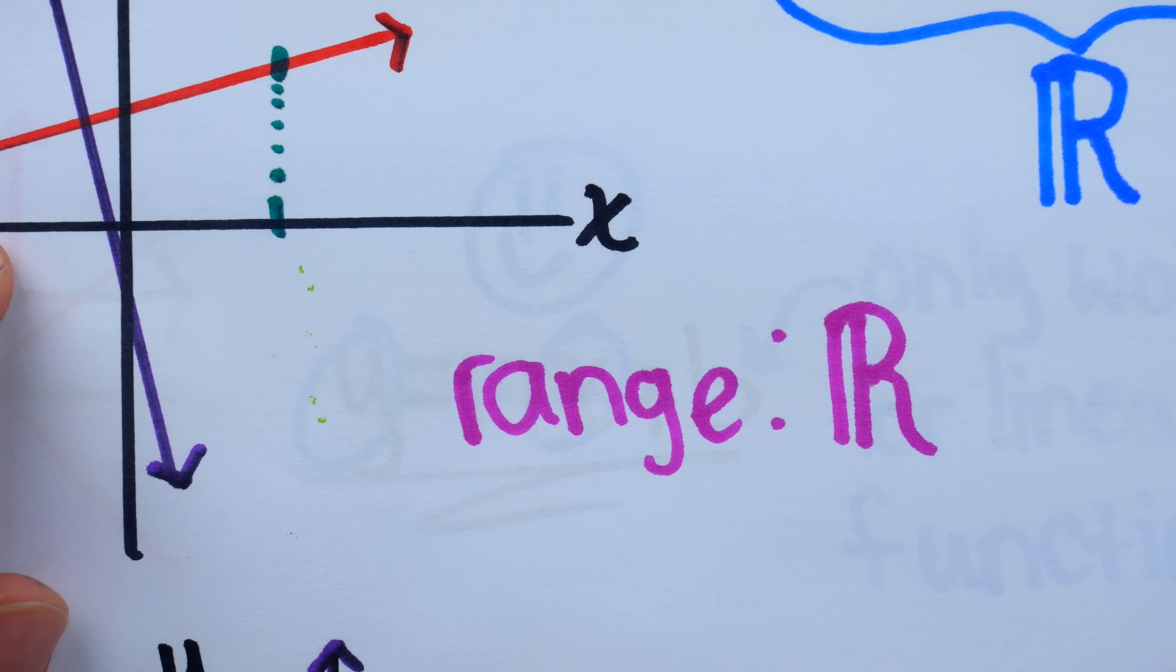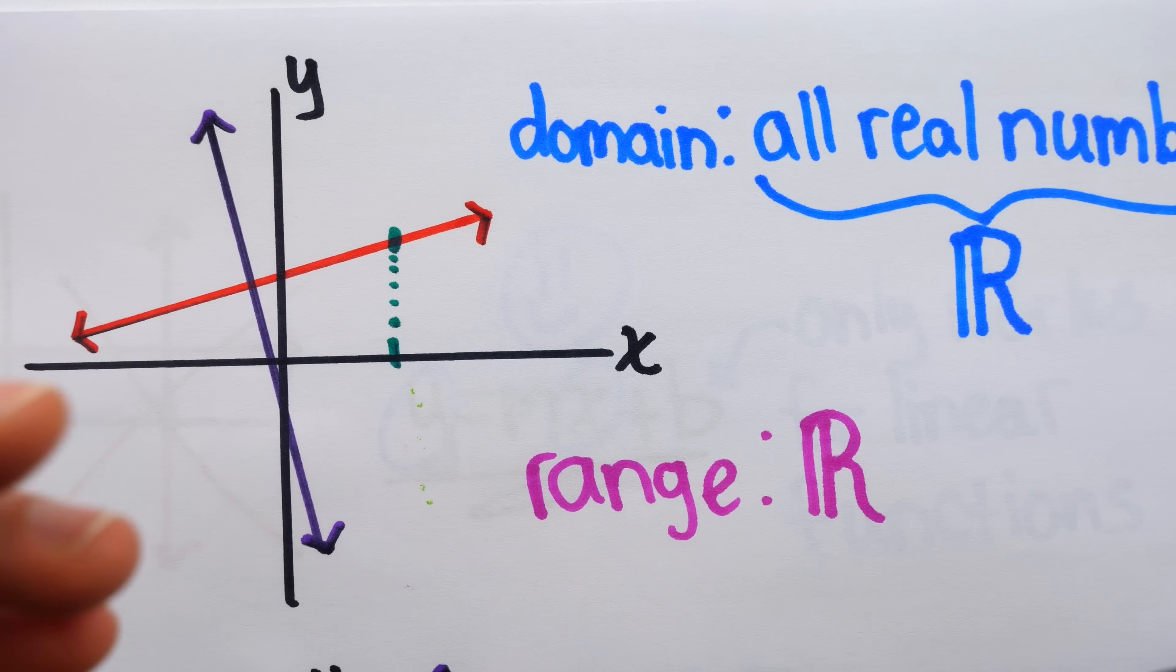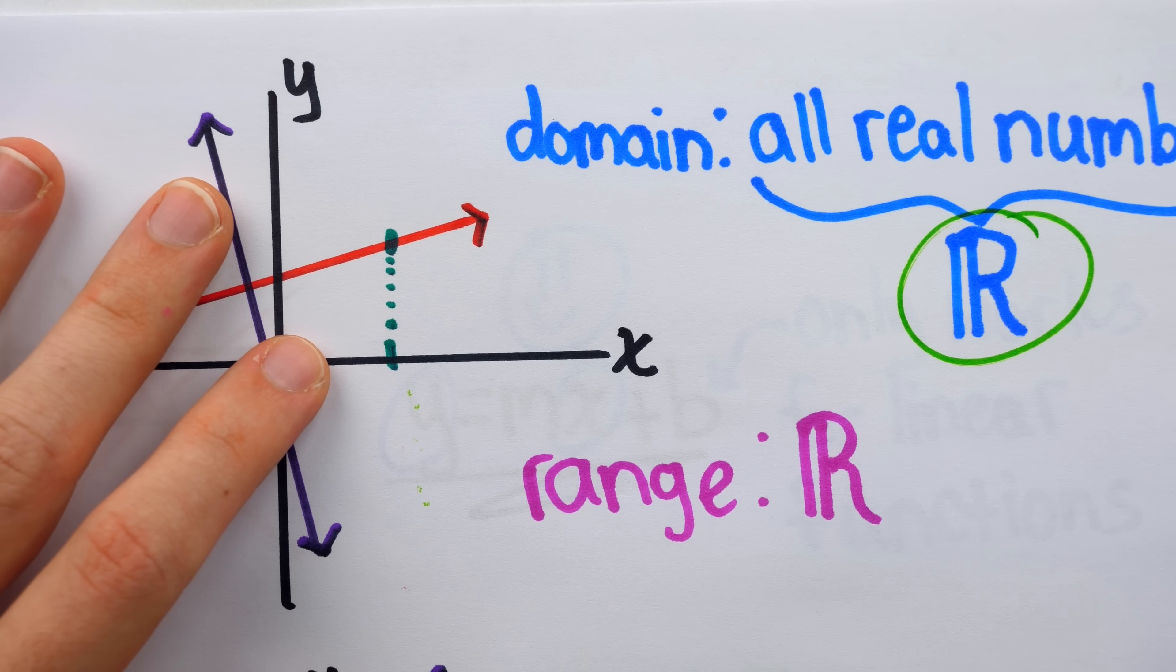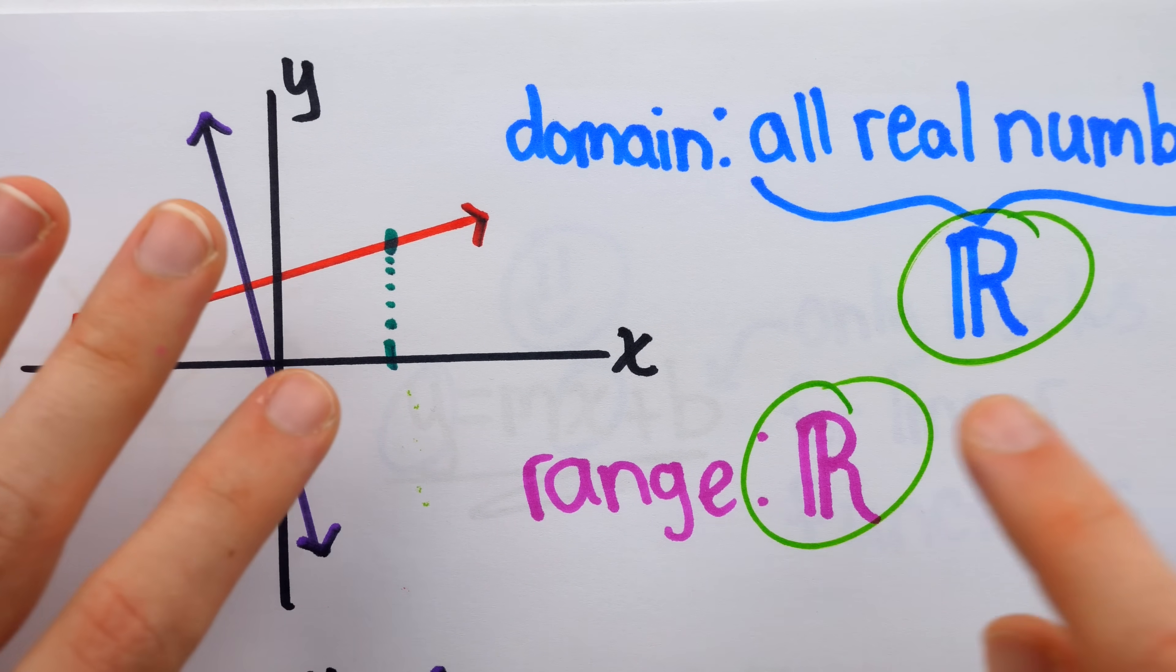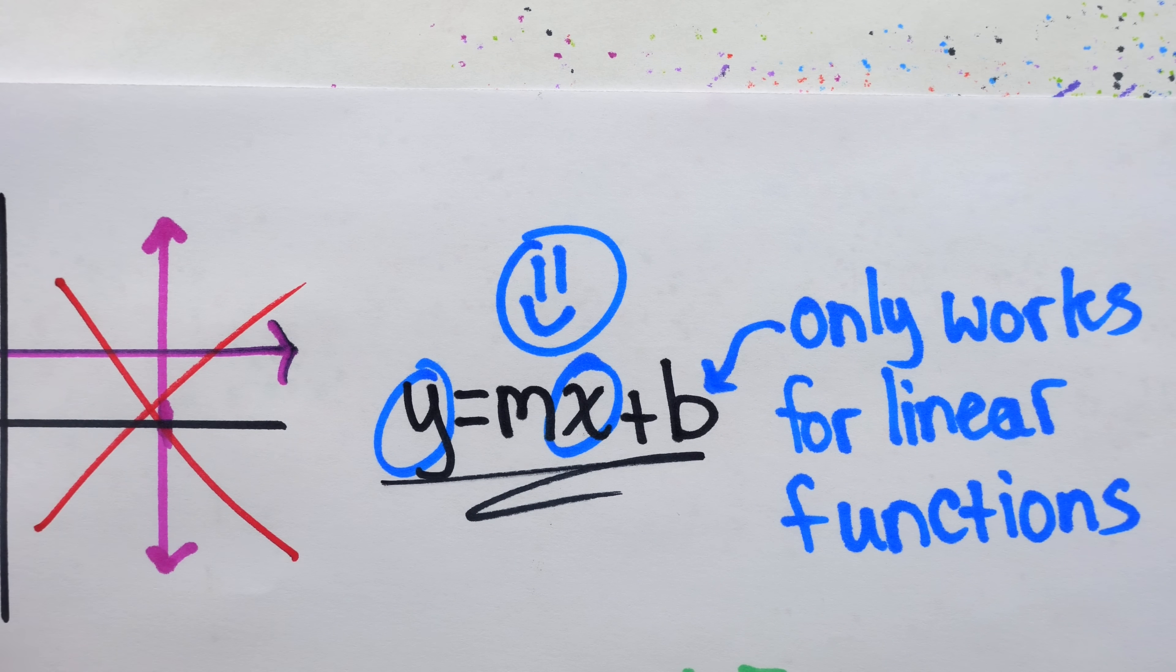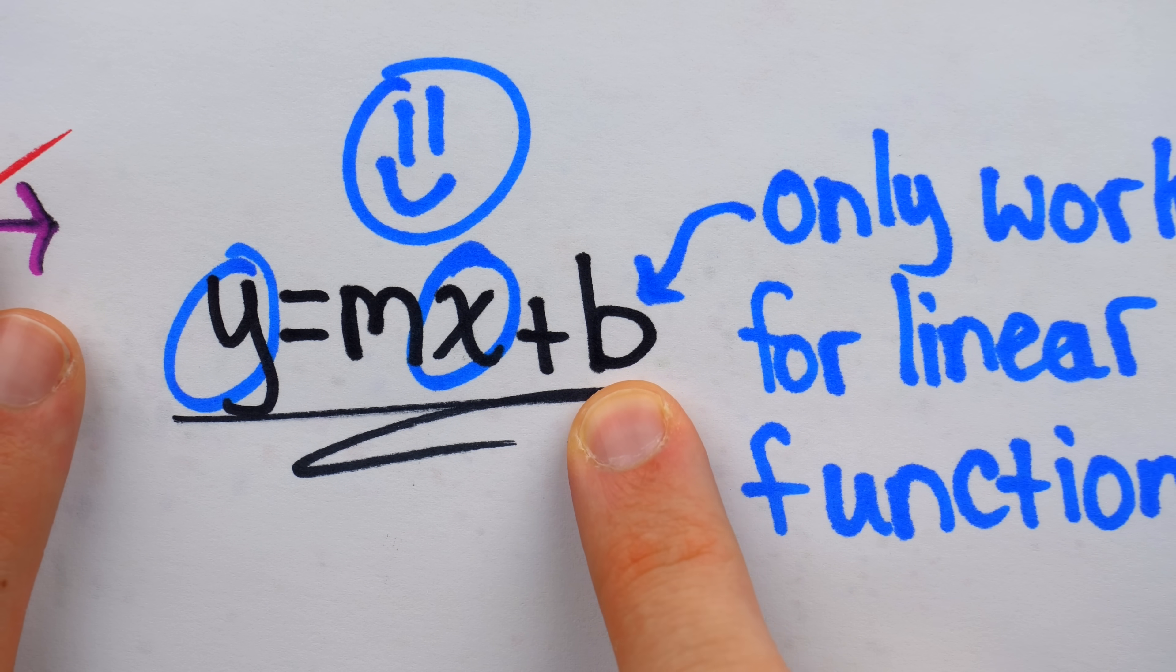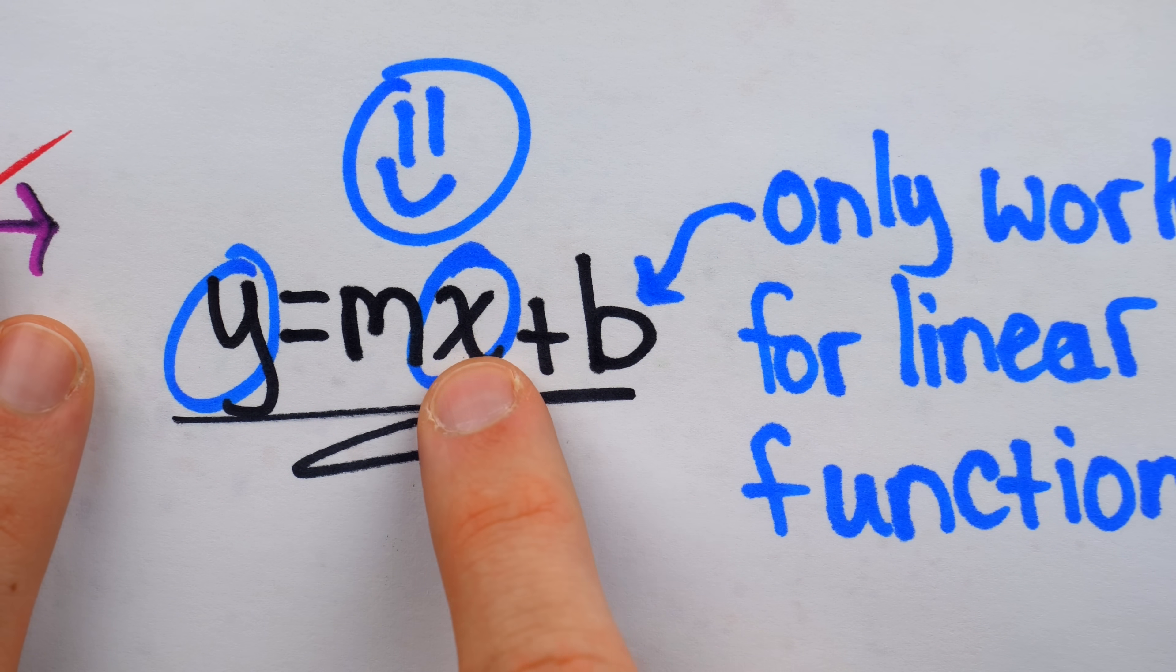One last thing before we go, it might seem a little hand wavy to say, yeah, perpendicular lines will always have the reals as their domain and as their range. How do we know that? Well, the domain is easy enough. Remember, right now we're assuming all of our lines can be written like this because we're only considering linear functions, and clearly we can plug any real number x into this equation.